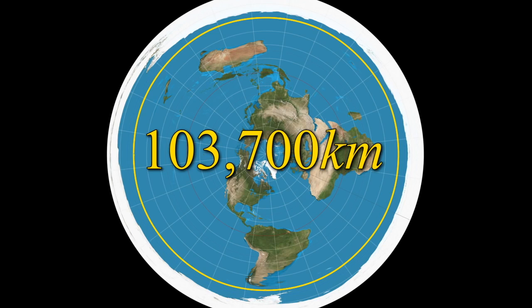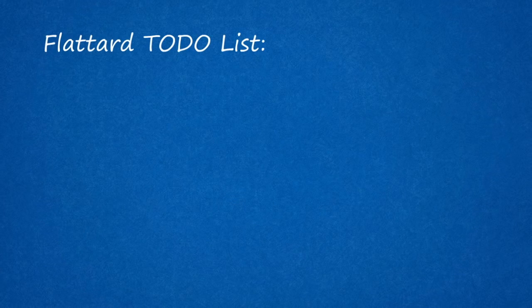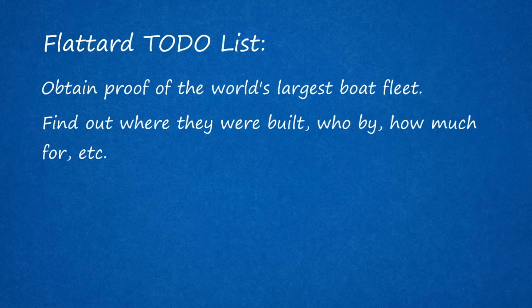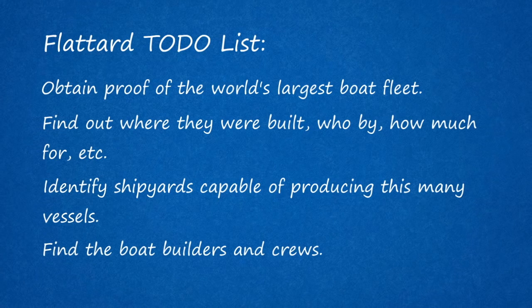Place a boat every 10 kilometres so no Flat Earther can sneak past under the horizon, and the UN needs around 10,000 patrol boats just to stop Flat Earther explorers discovering the truth. Ignoring the high probability that no Flat Earther has explored further than the edge of their trailer park, I for one look forward to them providing proof of the largest boat fleet in the world, comprised of craft capable of handling the worst of the Southern Ocean. I also look forward to them finding out where they were built, who by, how much for, identifying shipyards capable of churning out 10,000 such vessels, and finding out where all the boat builders and crew actually are, given that nobody has noticed any of this stuff going on.